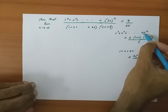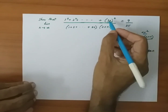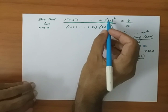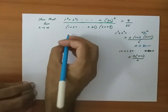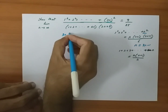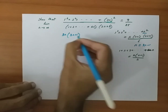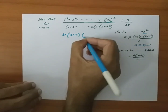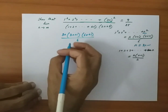Here we have n squared and we have 3n squared, so leaving the square part, the remaining n here is 3n. So I can write n equal to 3n. To find this value, wherever we have n in the formula I will be substituting 3n. So I get 3n into 3n plus 1 into 2 into 3n, that is 6n plus 1, divided by 6.